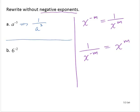6 to the negative second. I can think of as 1 over 6 to the positive second. 6 to the second is 32... I'm sorry, 36. So 1 over 36.